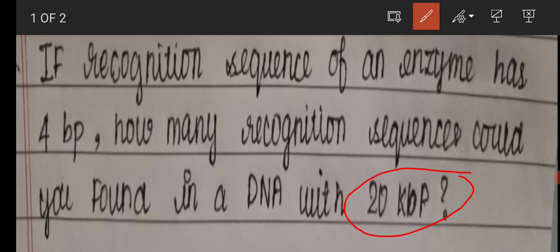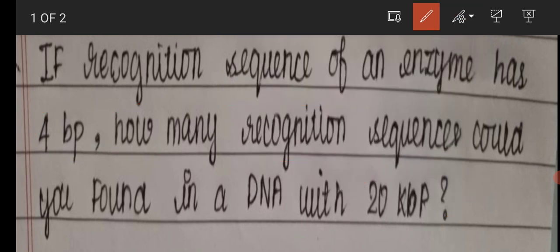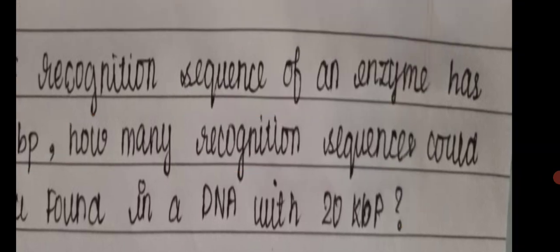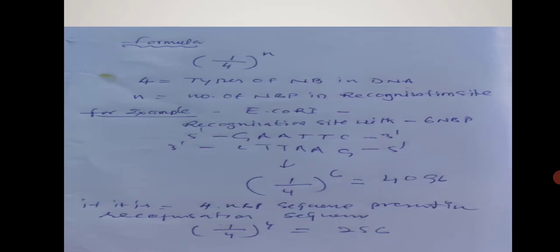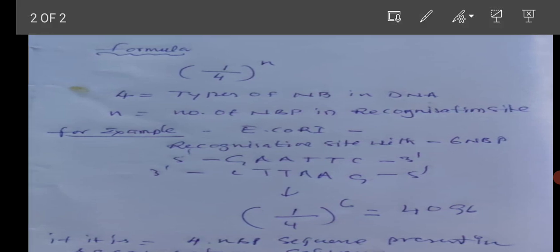So they are asking if the 20 kilobase pair DNA is there, then how many recognition sequences would be present if the enzyme has a four base pair recognition sequence. Now for this question, you can see one formula that is very helpful. Look at this formula.